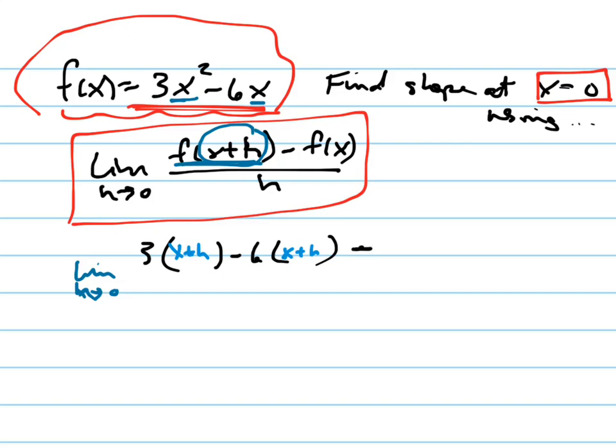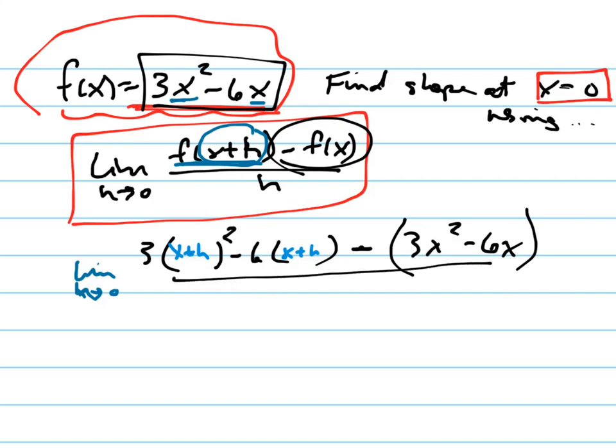Notice now I'm subtracting f of x, which is that whole thing. 3x squared minus 6x. Whoops, I forgot a squared right there, right? That's being squared. All over h.